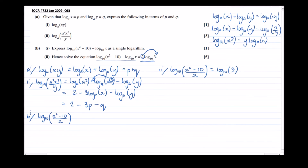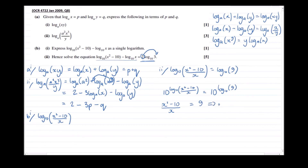Now we're ready to remove the logarithms from both sides. Technically we do this by raising 10 to the power of each side. So 10 to the power of log to the base 10 of (x squared minus 10) over x equals 10 to the power of log to the base 10 of 9. The logarithm and the power of 10 cancel on each side, giving us (x squared minus 10) over x equals 9. Multiplying both sides by x gives x squared minus 10 equals 9x.